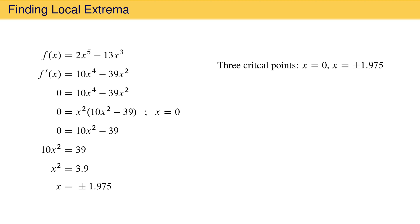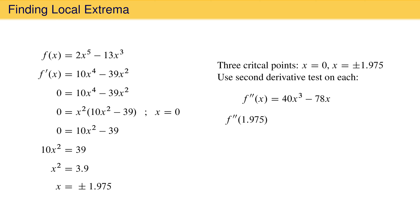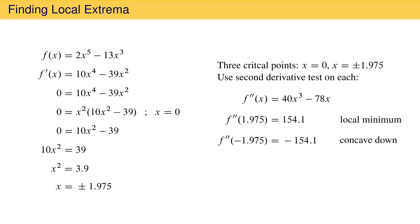To determine if these critical points really are extrema, and to identify them as local minima or maxima, we apply the second derivative test. The second derivative of the function is 40x cubed minus 78x. Evaluating the second derivative at 1.975 gives 154.1. Because it is positive, the function is concave up at this critical point, which means x equals 1.975 is a local minimum. Evaluating the second derivative at negative 1.975 gives negative 154.1. Because this is negative, the function is concave down at this critical point, making x equal to negative 1.975 a local maximum. Evaluating the second derivative at zero gives zero, which does not match the criteria for a local maximum or minimum — therefore, no conclusion can be drawn about this critical point.